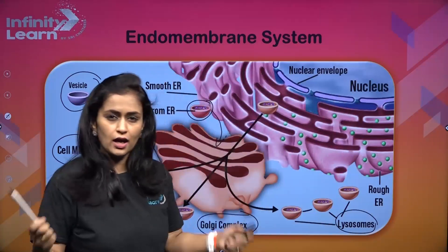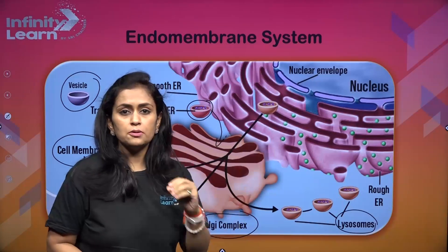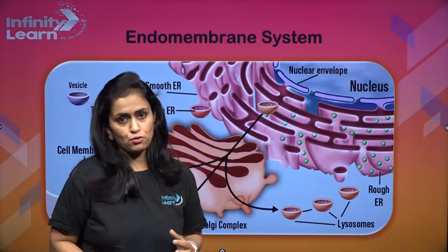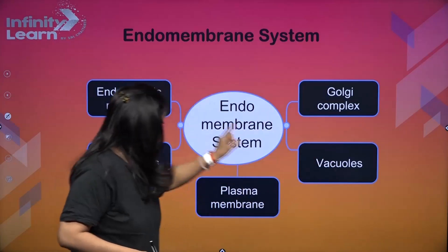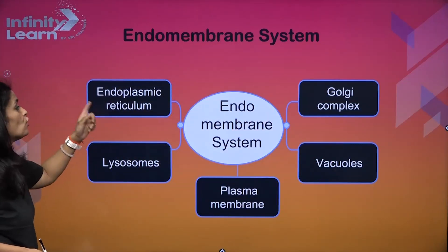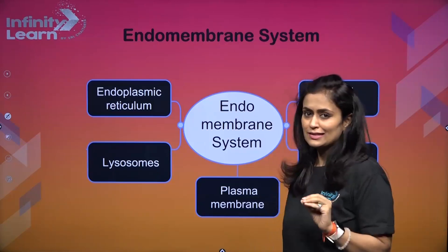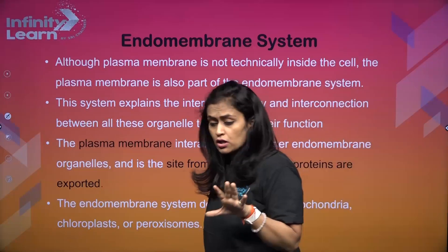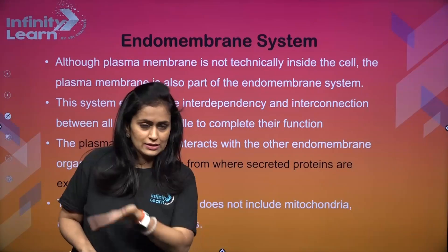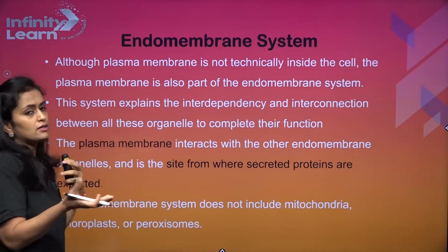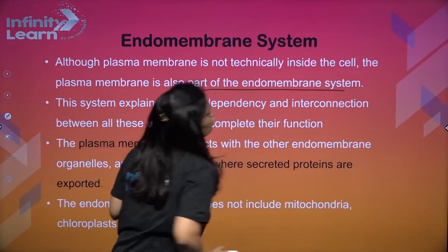So what are the members of this endomembrane system? It is a group sophisticatedly involved in production, modification, and transportation of proteins and lipids. Under the endomembrane system we have: Golgi complexes, vacuoles, plasma membrane, lysosomes, and endoplasmic reticulum. All five of these organelles are members of the endomembrane system. Although the plasma membrane is not inside the cell — we say 'endo' meaning inside — but from inside the cell, it is merging and delivering materials out. So technically it's not entirely 'endo,' but it is doing its job in the system, and that's why it is a part of the endomembrane system.